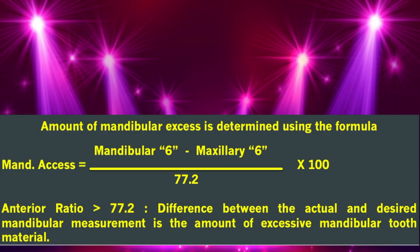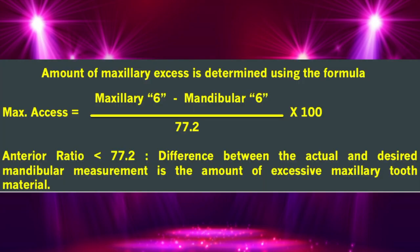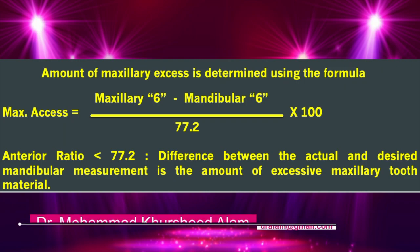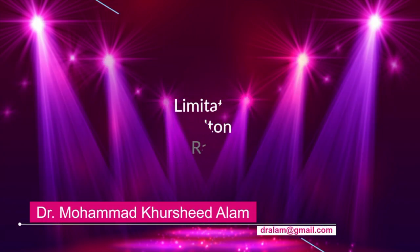For the anterior ratio, a mean value of 77.2 is the standard. Less than 77.2 means the difference between the actual and desired mandibular measurement is the amount of excessive maxillary tooth material.